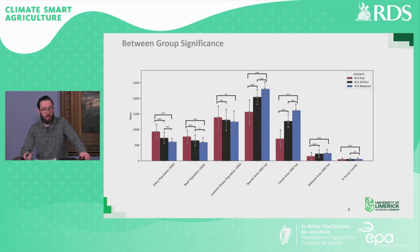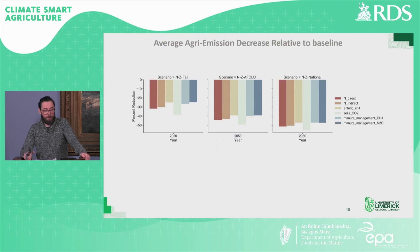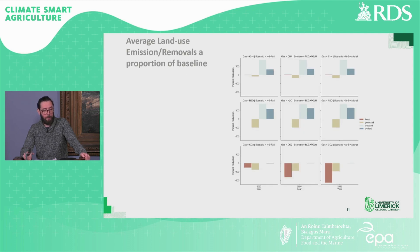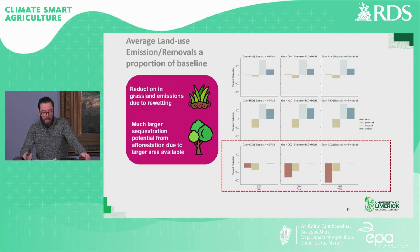Here we have the between-group significance of some key parameters in the model. The most significant variables were the reduction in dairy and beef population and spared area, forest and wetland area. This slide represents the average agricultural emission decrease relative to the 2015 baseline for the various scenario groups. For the AFOLU and national group, there is a 40 to 50% emissions reduction, based on current or modestly improved productivity per animal without inclusion of future abatement options. We also see emissions and removals for land uses relative to the 2015 baseline — grassland represents an emission reduction, while forest land use represents an increase in sequestration.